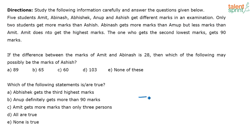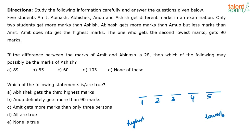There are five positions. The person at position one has the highest mark and position five has the lowest. Since only two students get more marks than Ashish, Ashish has to be in third position. His rank has to be third.